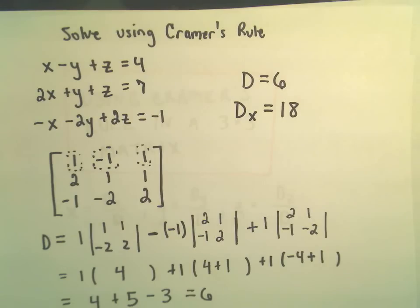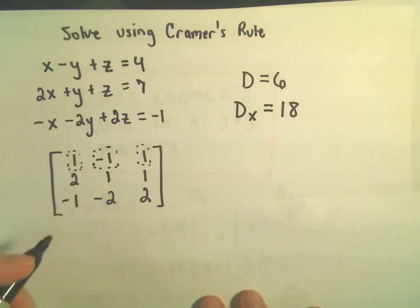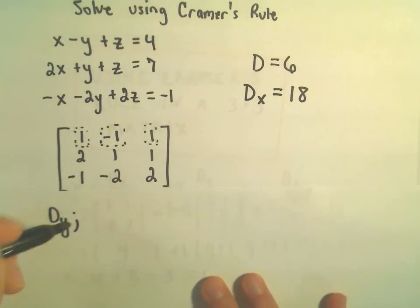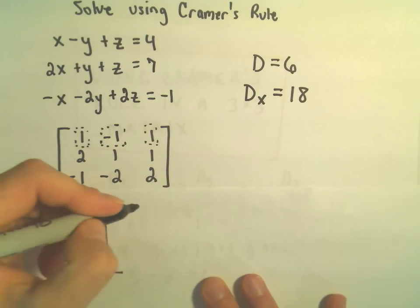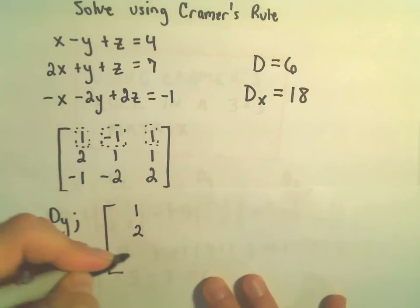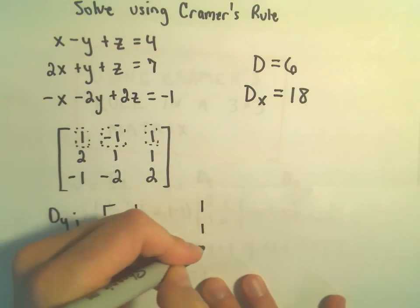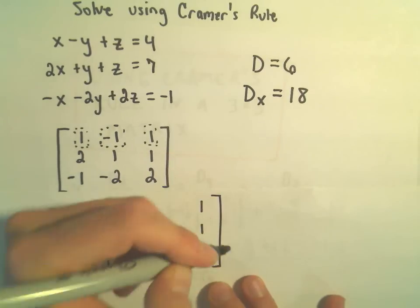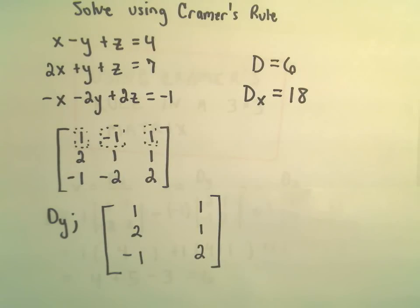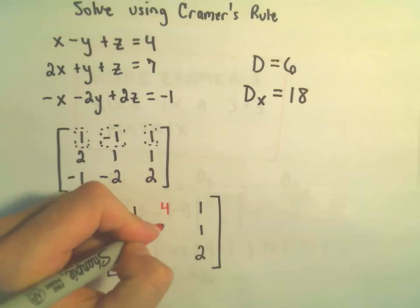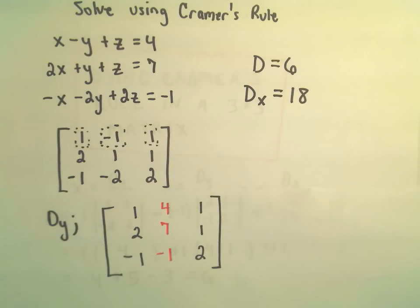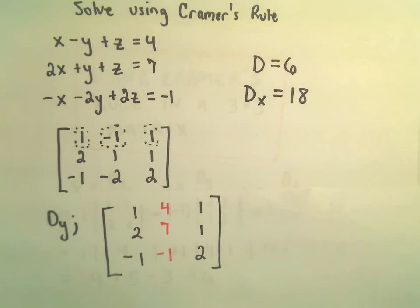Two more to go. To compute D sub y, I leave the original x column and the z column alone, and replace the y column with the values 4, 7, and negative 1. I'm going to expand along the first row.